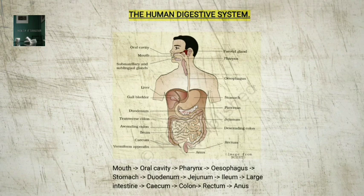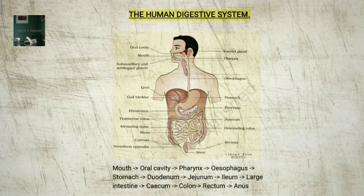The ileum opens into the large intestine. The large intestine consists of three parts: 1. Cecum, which hosts some symbiotic microorganisms, and the vermiform appendix arises from the cecum. 2. Colon, which is divided into an ascending, a transverse, and a descending part. 3. Rectum — the descending part of the colon opens into the rectum, which opens out through the anus.